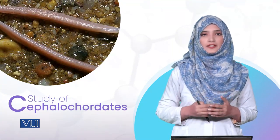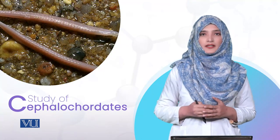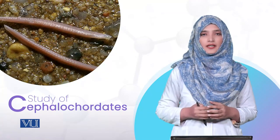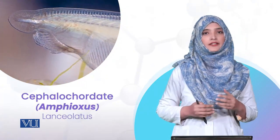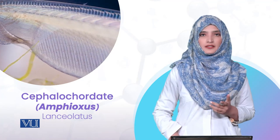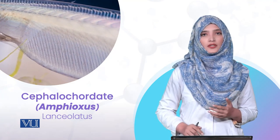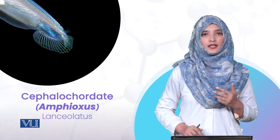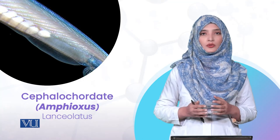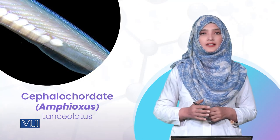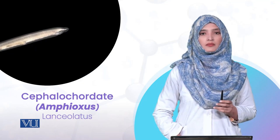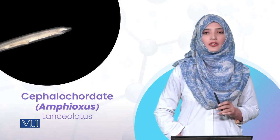If we talk about the general characteristics of this group, there are basically two genera: Amphioxus and Asymmetron. We'll talk about Amphioxus. Amphioxus is an animal that is fish-like, transparent, and non-pigmented. These characteristics include notochord and nerve cord that persist throughout life, along with pharyngeal slits present on the ventral side. As you can see in this picture, this is the Cephalochordata Amphioxus.